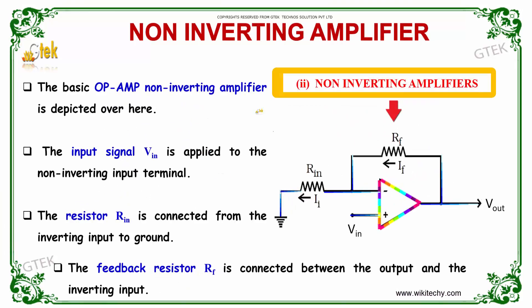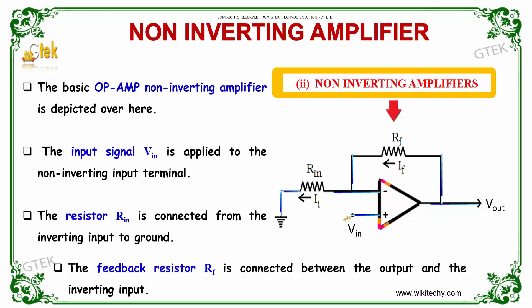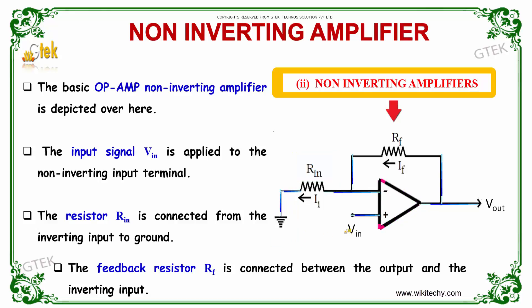Now let's discuss the non-inverting amplifier. The basic operational amplifier has this second category — the non-inverting amplifier — which has been depicted here. The input signal VIN is applied to the non-inverting input terminal. The resistor RIN is connected from the inverting input to the ground. The feedback resistor RF is connected between the output and the inverting input.